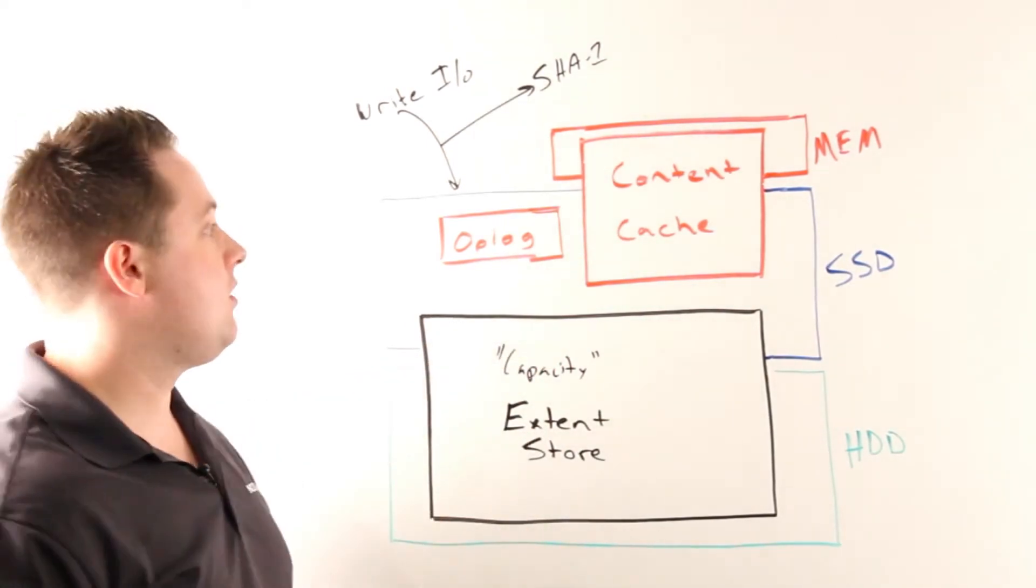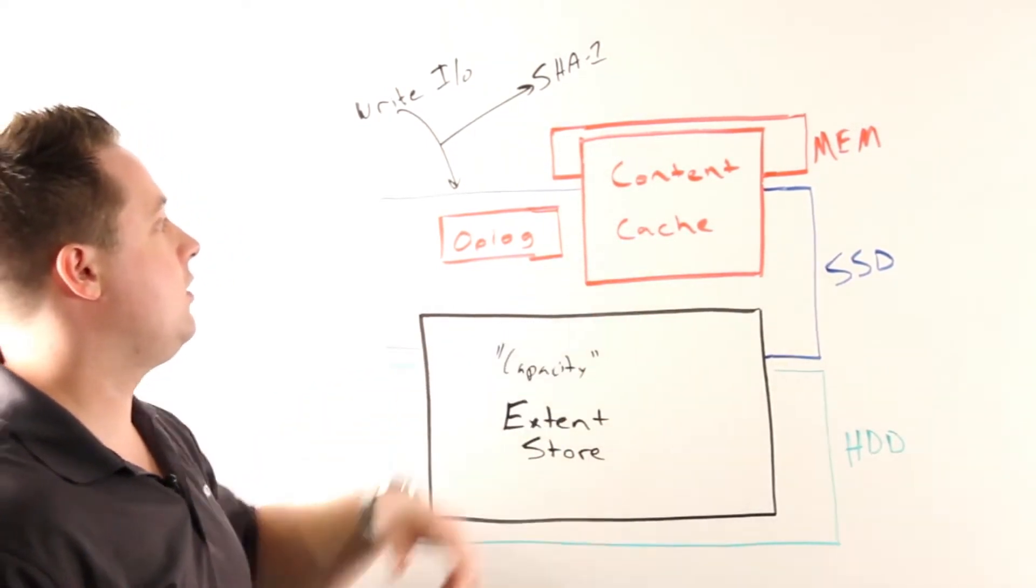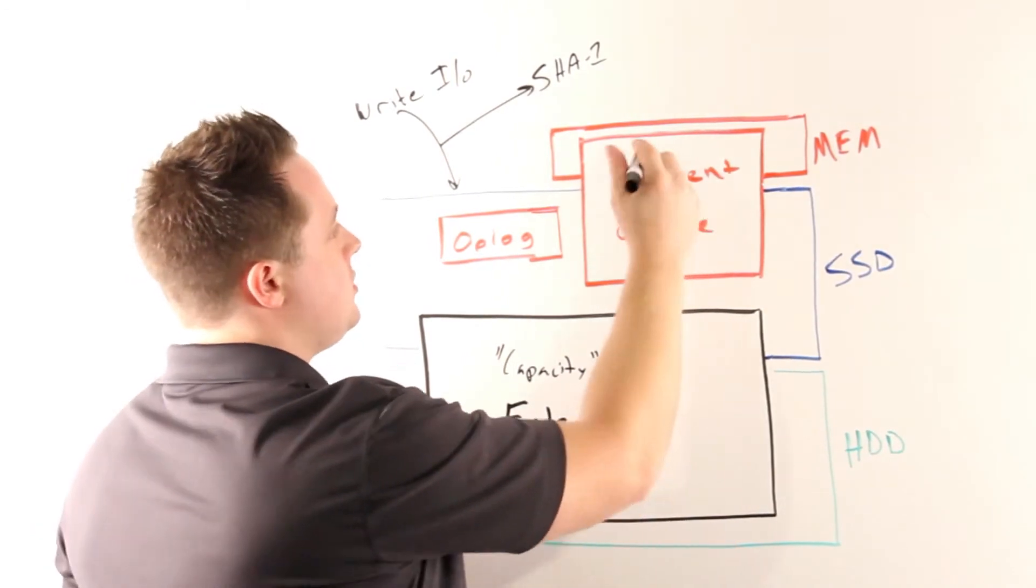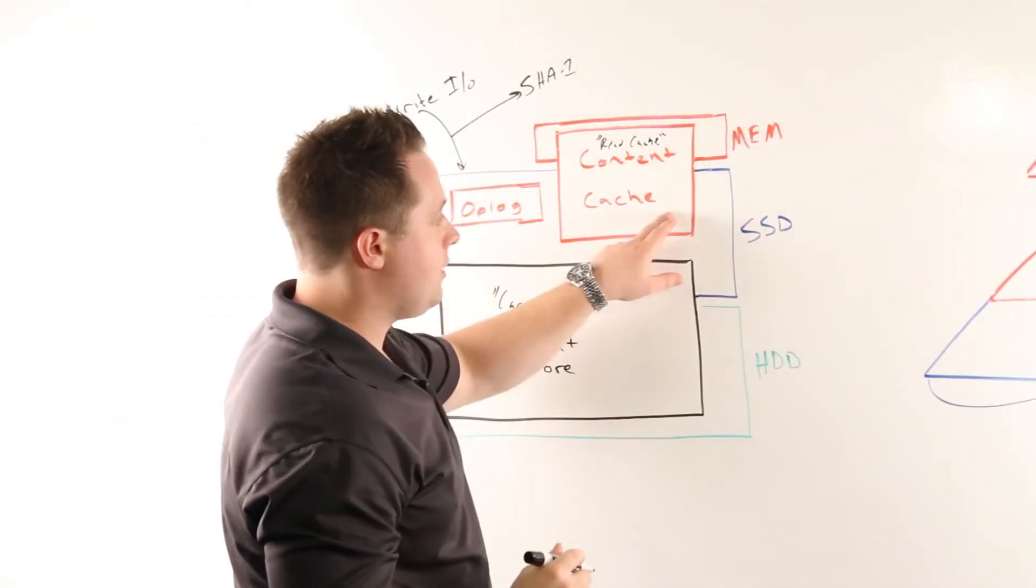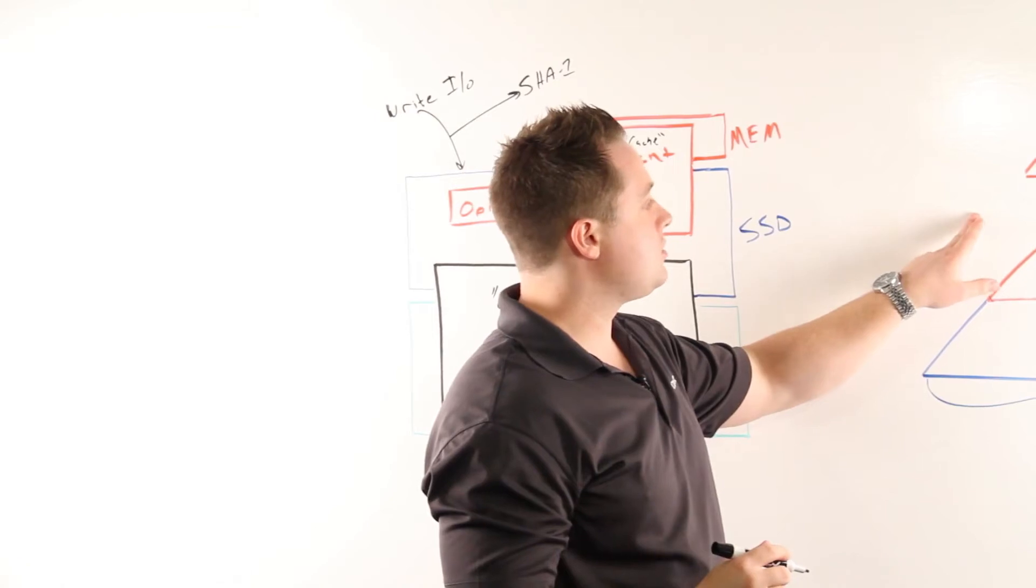The other piece is what we call cache side dedupe, which happens in our content cache. This is an inline deduplicated read cache. We'll take a deeper look at what the content cache looks like.